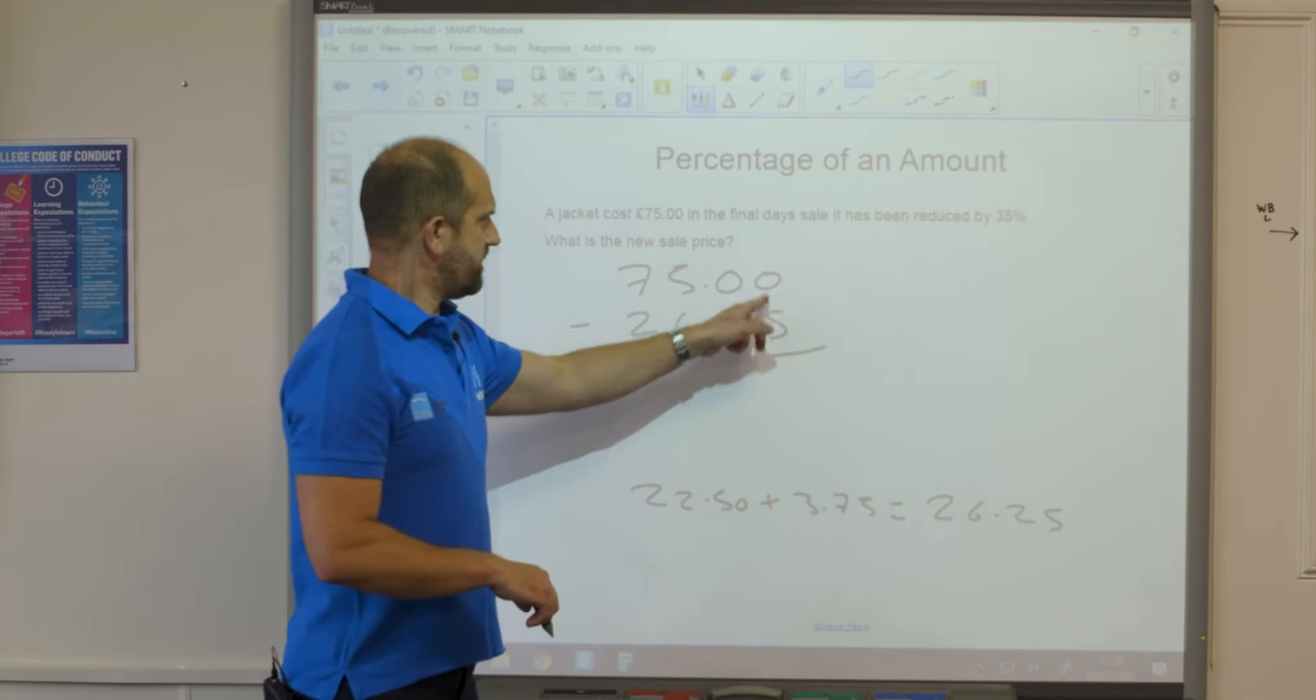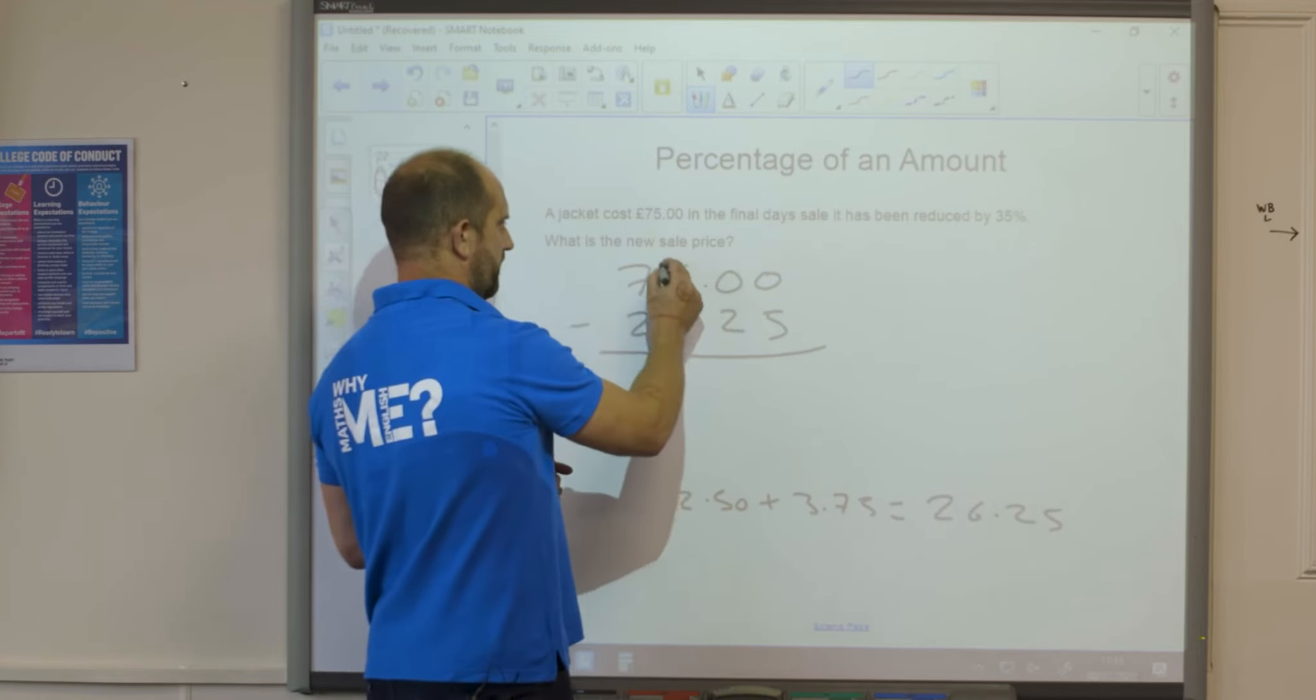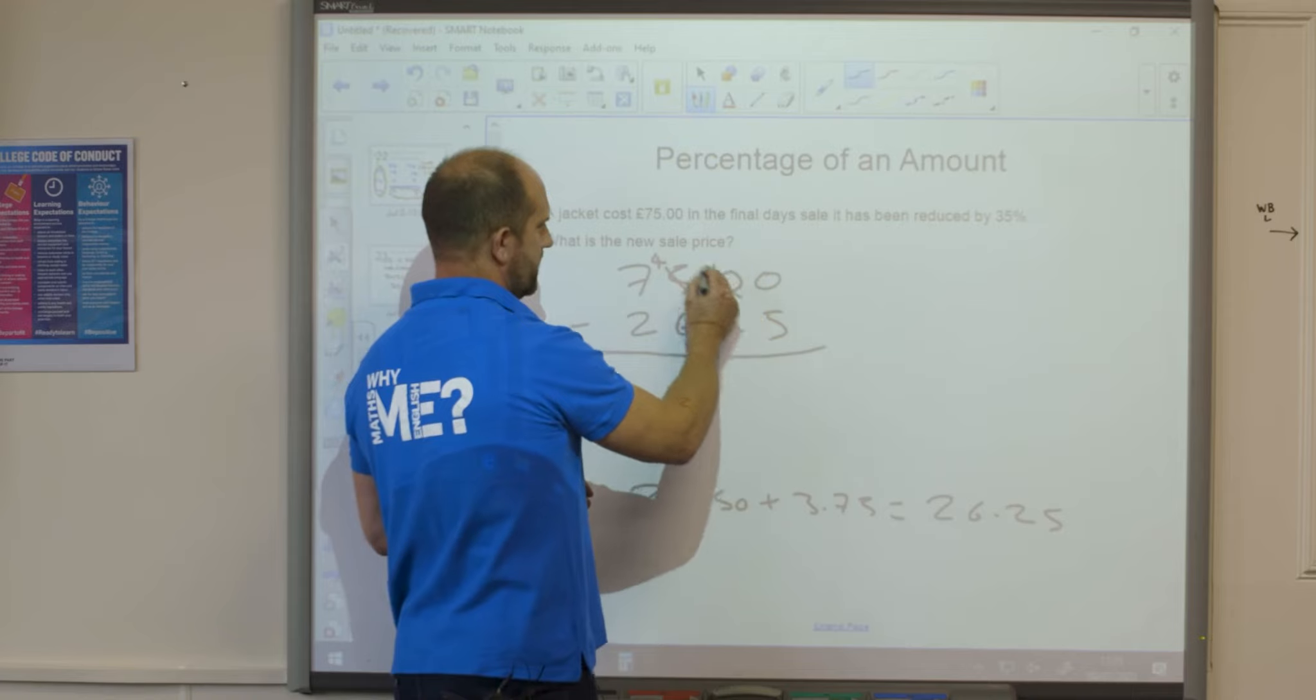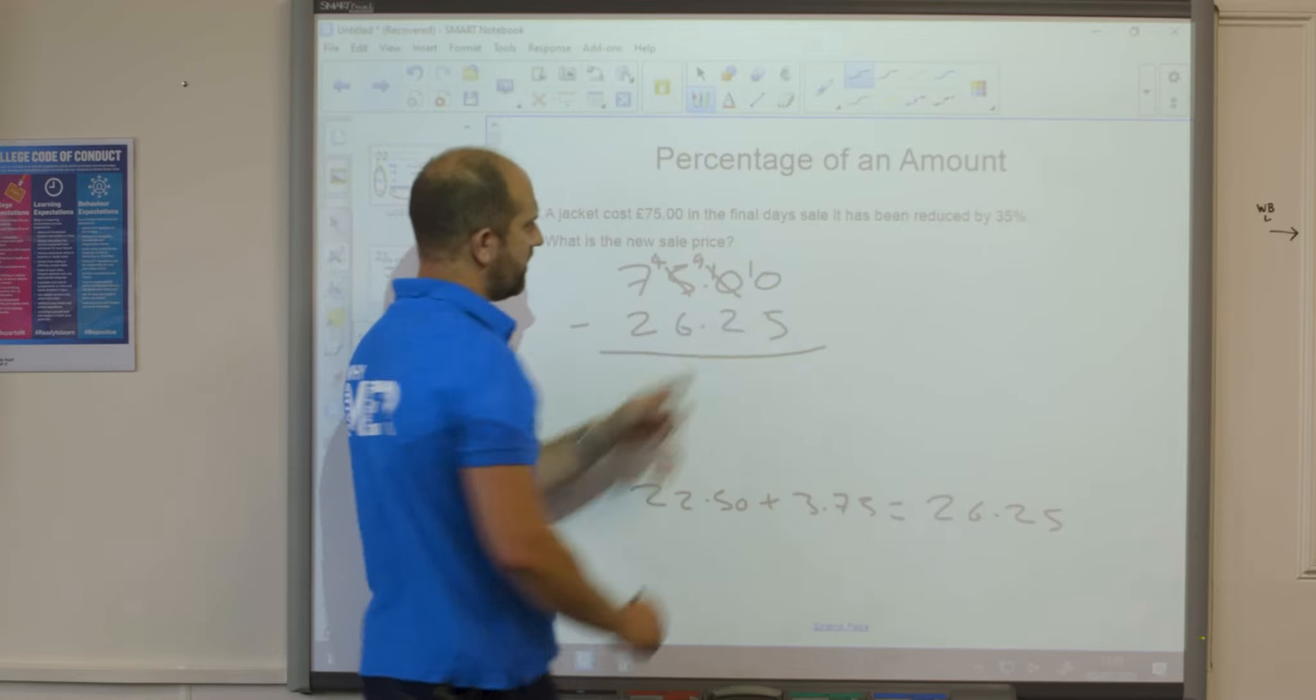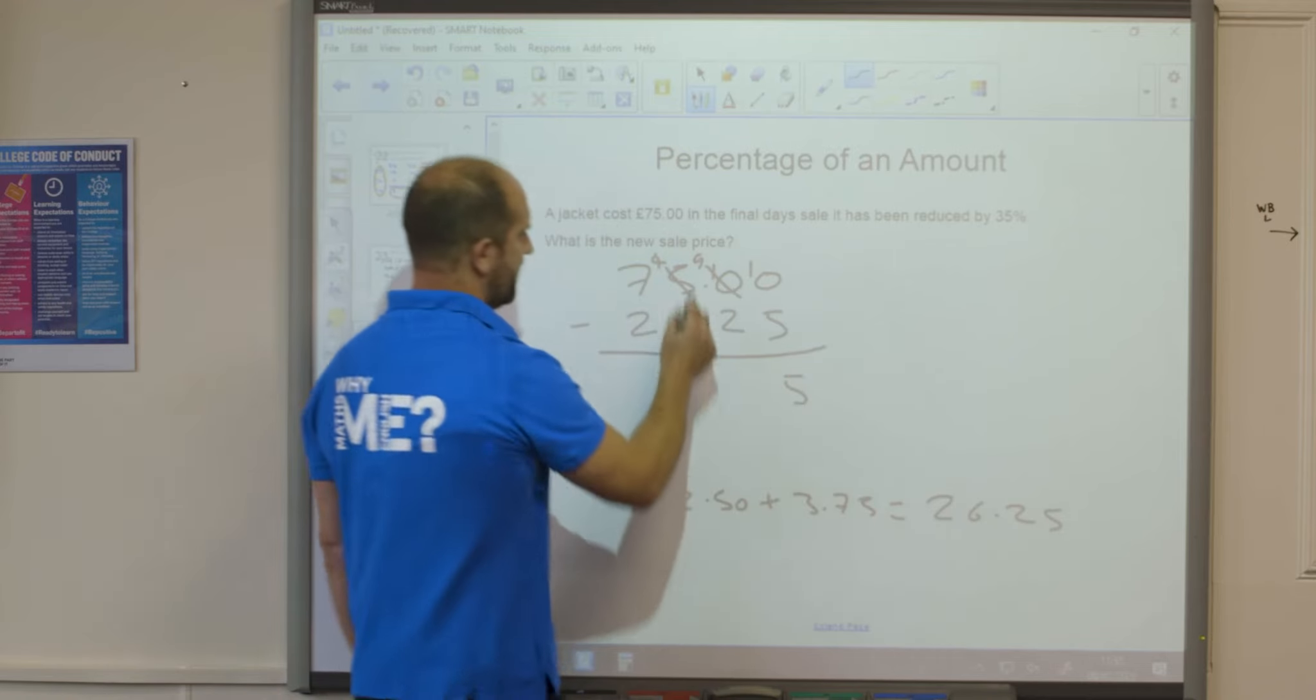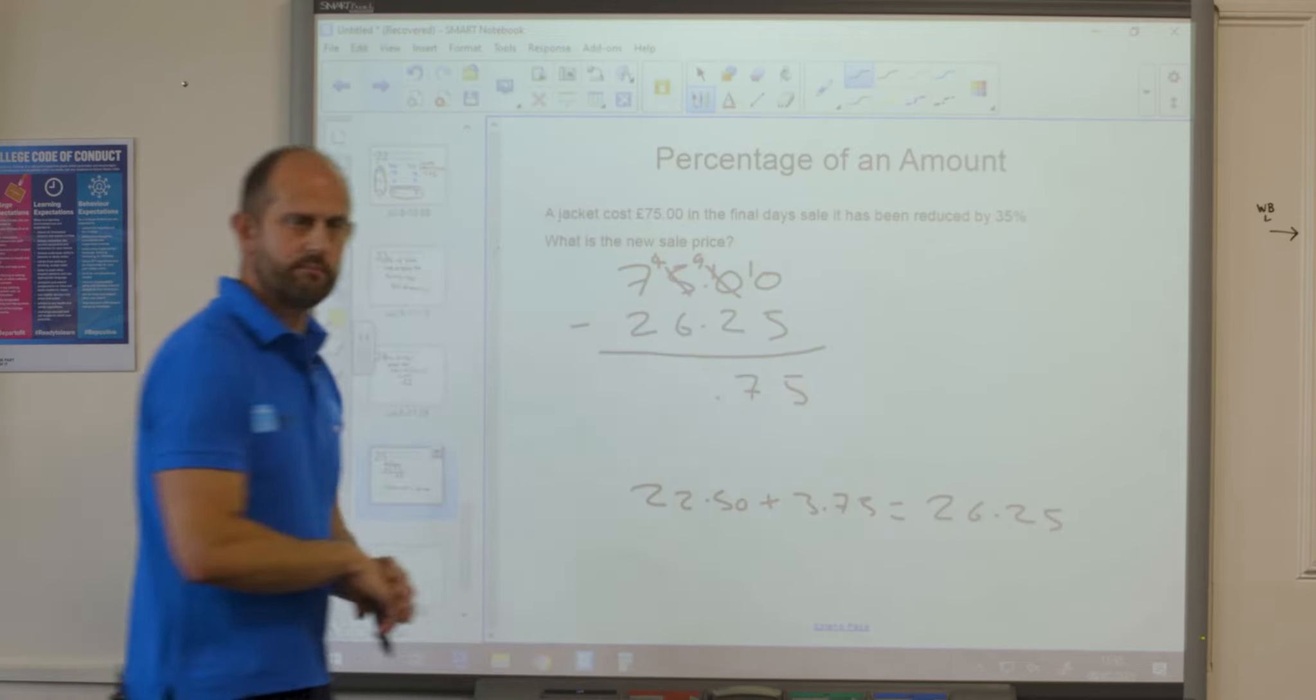I've got a 0 here. I've got 0 take 5 cannot be done. Can't borrow from here so I've got to borrow from there. So this becomes a 4. That becomes 10, that now becomes 9. So now I've got 10 take away 5, that gives me 5. 9 take away 2, that gives me 7. Decimal point must go in.